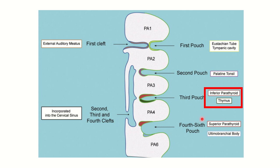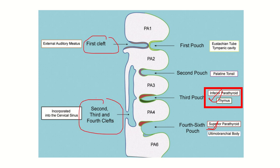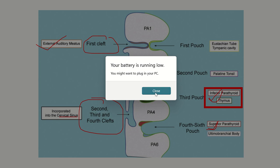From this picture we can see four important boxes — first, second, third, and fourth. The inferior parathyroid develops from the third pouch, but the superior parathyroid develops from the fourth pouch. This is a very important distinction. Regarding the clefts: from the first cleft, the external auditory meatus develops, and the second, third, and fourth clefts are incorporated into the cervical sinus.